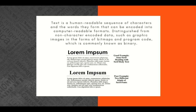So what is text? In information technology, text is a human-readable sequence of characters and the words that they form that can be encoded into computer-readable formats. Text is usually distinguished from non-character encoded data, such as graphic images in the forms of bitmaps and program codes, which is commonly known as binary.